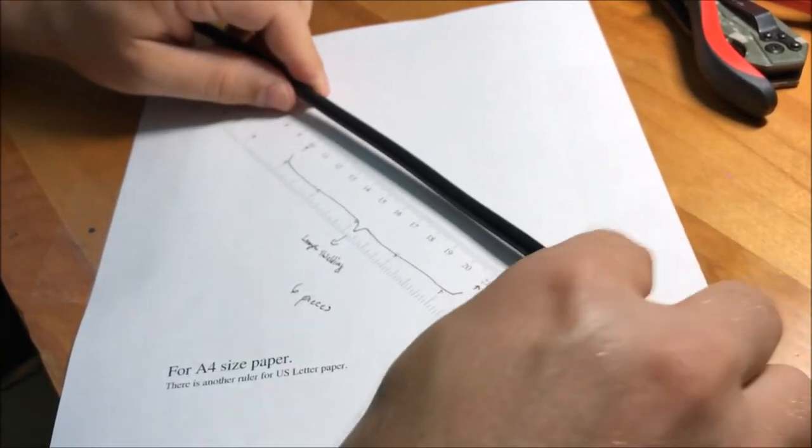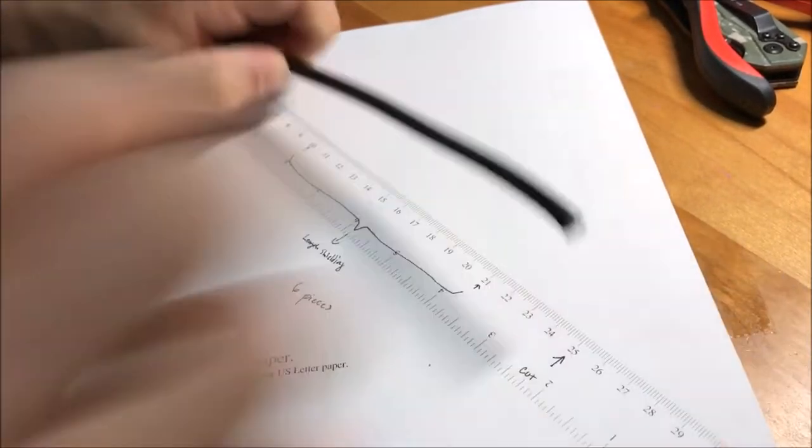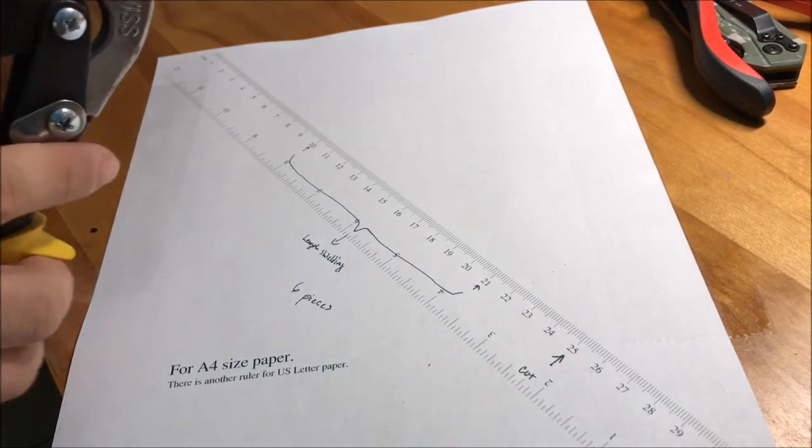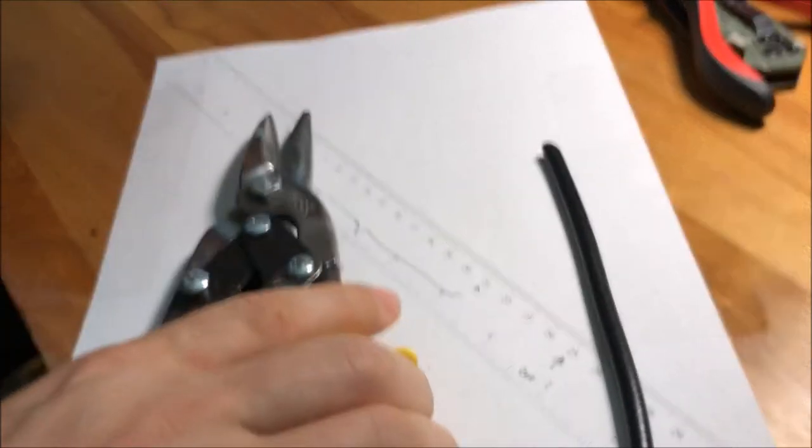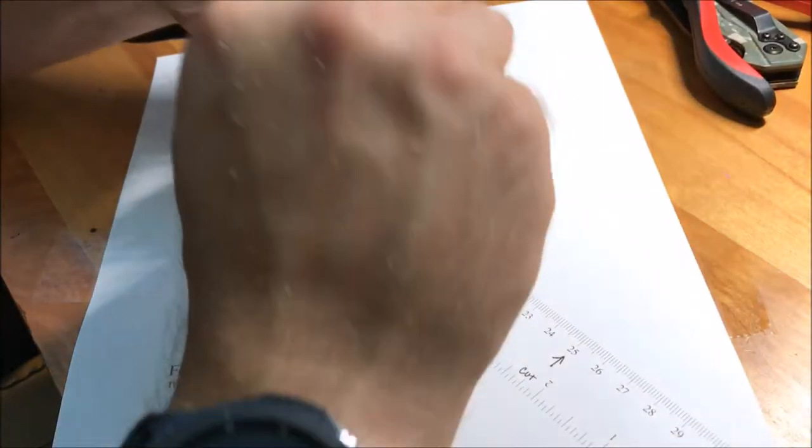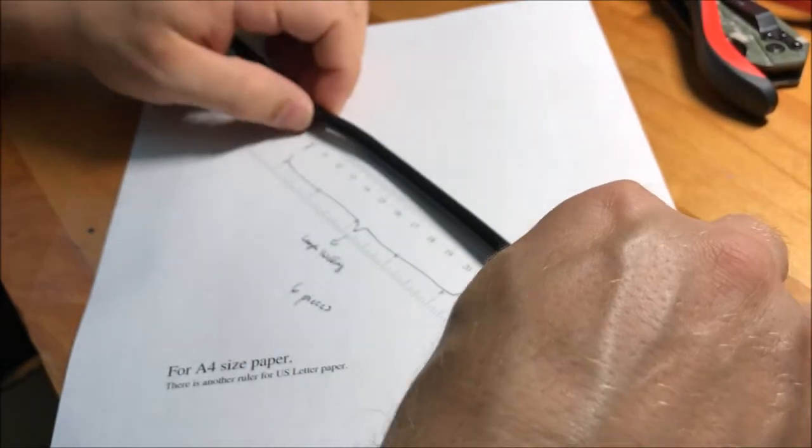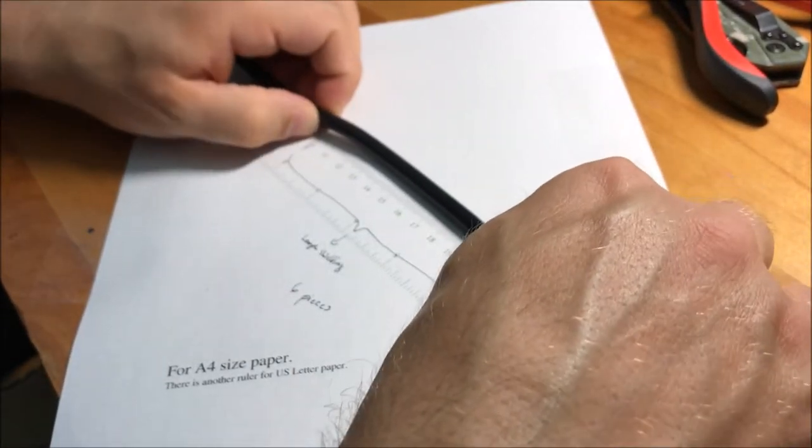As you can see from the video there, I'm stretching this out for about 11 centimeters. I had to start at the 11 centimeter mark because that's just kind of the way the ruler printed out. So what we're doing basically is making six strips and we're going to connect them together.